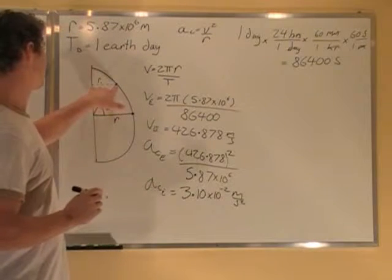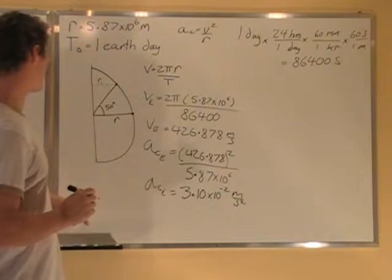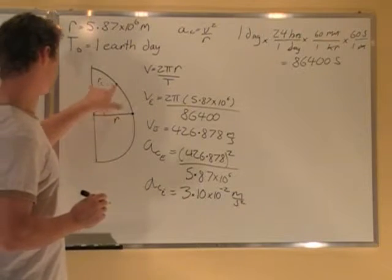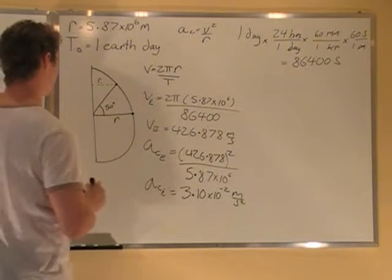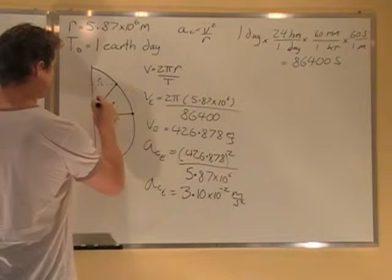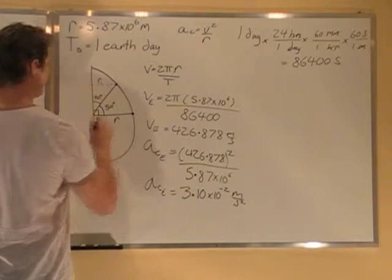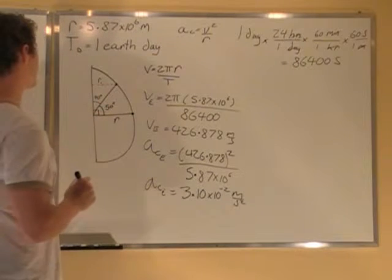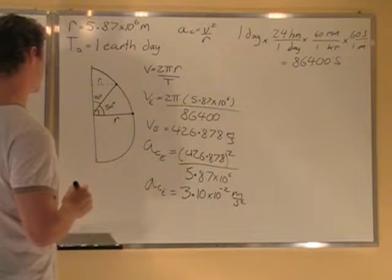Now we want to figure out the centripetal acceleration up here. So what we have to do is we have to use this radius here, r1. So what is r1? Well, if this is 50, we know this whole thing is 90. This must be 40 here. 40 degrees. Now r1, we have to use sine 40 to figure out r1.